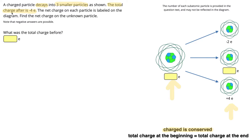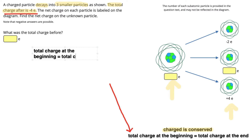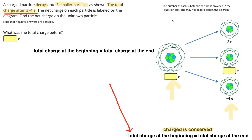The first useful piece of information we've been given is that the total charge after is negative 4e. So we can use our conservation of charge equation. Since we know the total charge at the beginning equals the total charge at the end, and we know the total charge afterwards is negative 4e, the total charge at the beginning is also going to be negative 4e. So that answers our first question — what was the total charge before? Negative 4e.